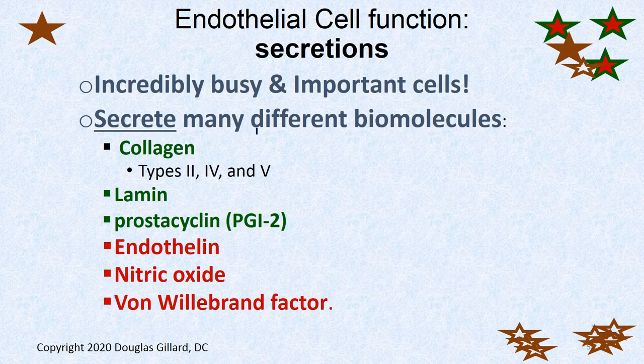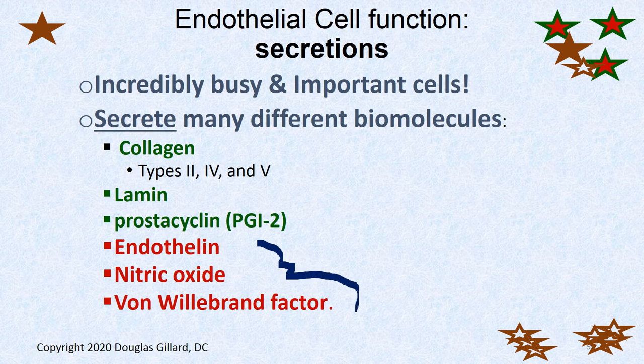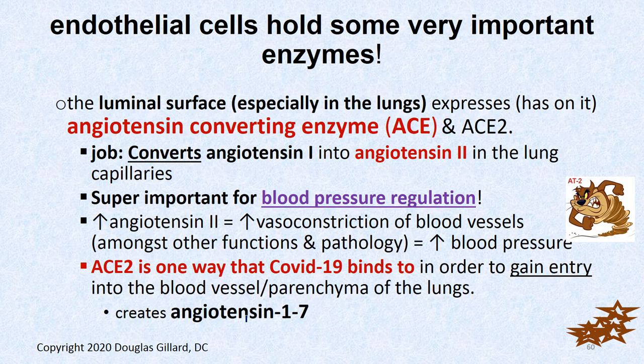Endothelial cells also secrete many things: different types of collagens, laminin, prostacyclin (PGI2), blood clotting factors, thrombogenic factors, endothelin, nitric oxide, von Willebrand factor — which is another COVID story we'll talk about on Thursday — and ACE. Endothelial cells have ACE, the key player in the RAAS system, which converts angiotensin 1 into the sometimes-evil angiotensin 2.